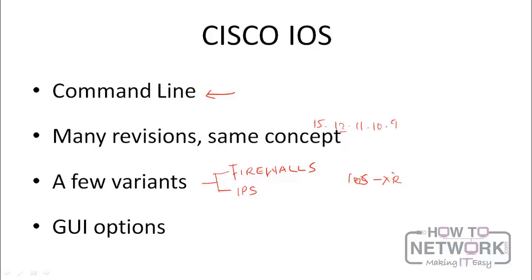For the scope of this series, we will only be focusing on the mainstream IOS. You also need to know that there are a couple of GUI options for configuring a Cisco device. These include the CCP — the Cisco Configuration Professional — which you can use to configure routers. You also have the ASDM, which is used to configure firewalls, and the IDM, which is used to configure IPS. The ASDM full meaning is the Advanced Security Device Manager, and IDM means the IPS Device Manager.